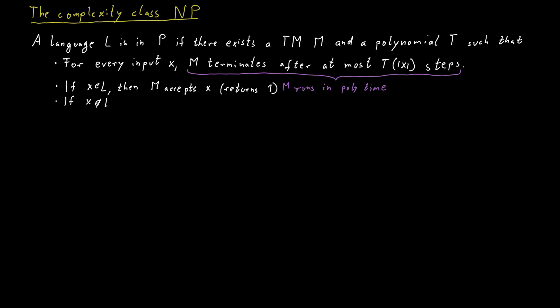And if the word is not in the language, then M rejects X, which means it responds no or returns zero.